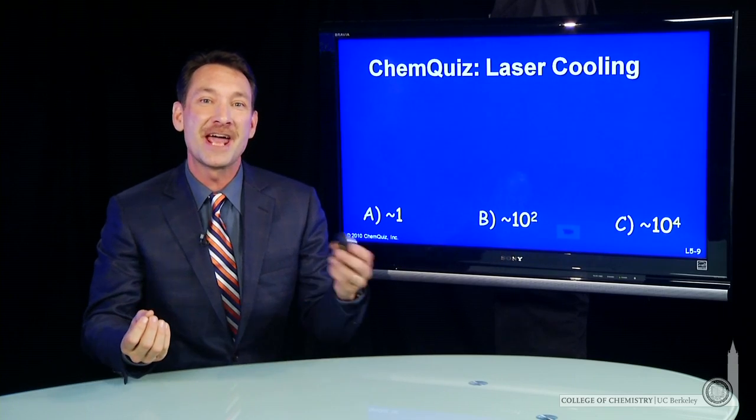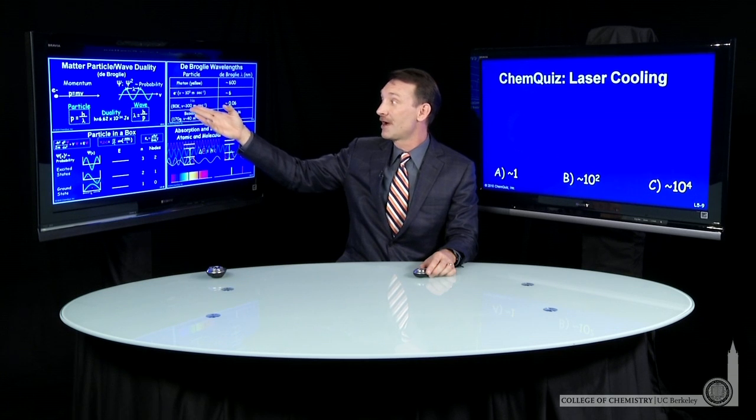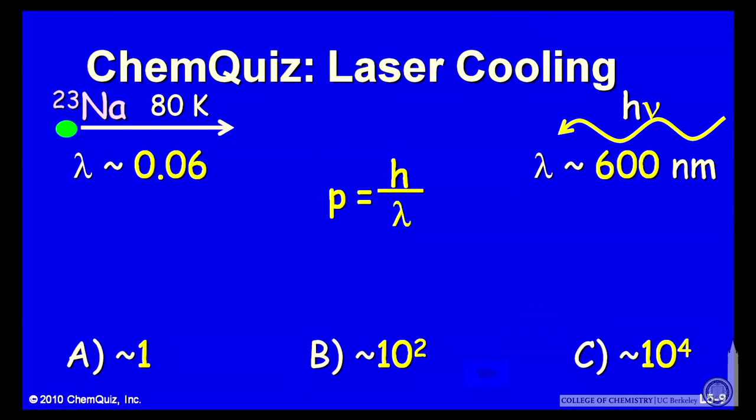Matter has both wave and particle characteristics. We've seen that momentum and wavelength are related by the de Broglie relationship, and we calculated it for several different objects. A sodium atom is going to be traveling at about 300 meters per second, and it has a wavelength of about six hundredths of a nanometer.